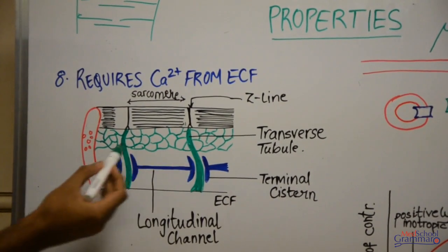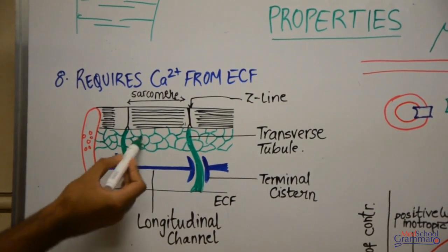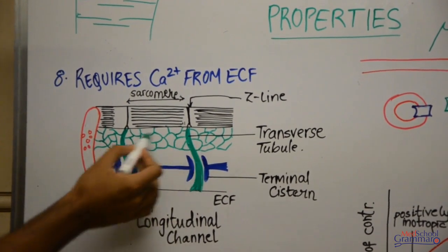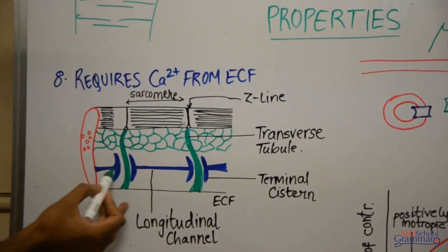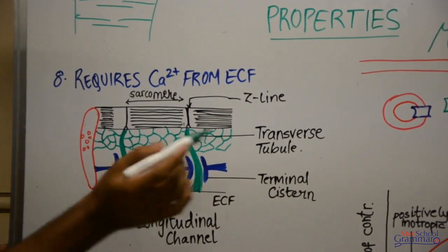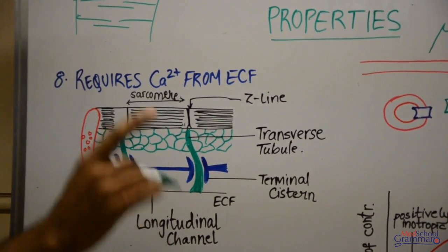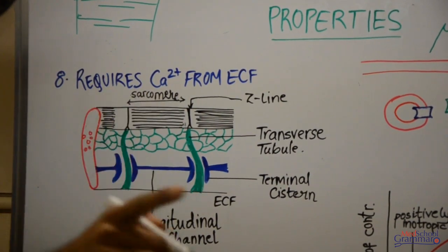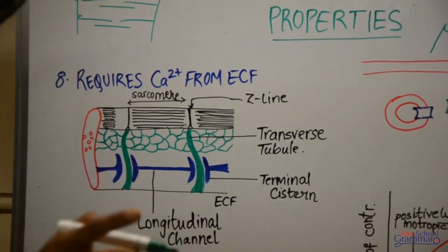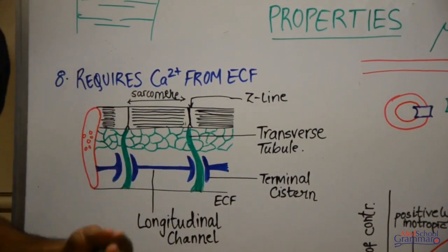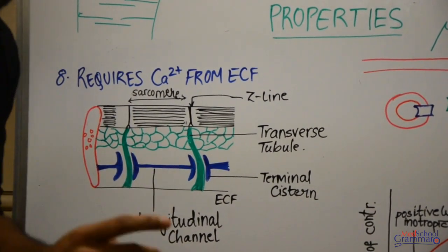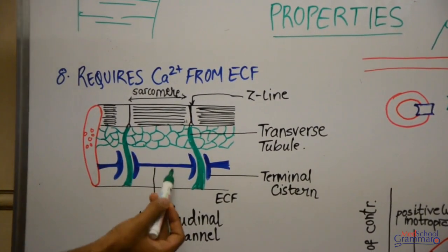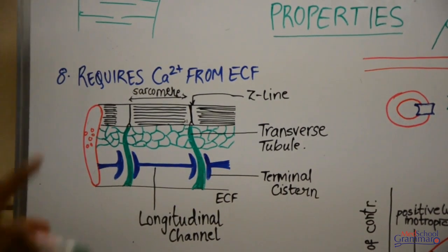These green structures and this blue structure — the blue is the endoplasmic reticulum. The endoplasmic reticulum present in muscle is known as sarcoplasmic reticulum, just like the plasma membrane is called sarcolemma, the endoplasmic reticulum is called sarcoplasmic reticulum.